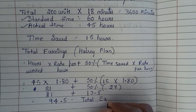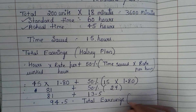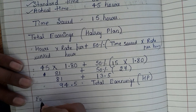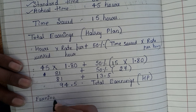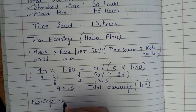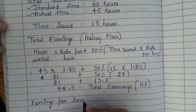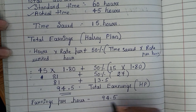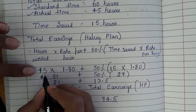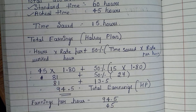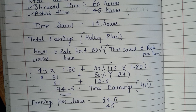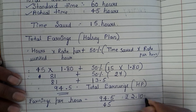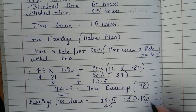Now we need to find earnings per hour under Halsey plan. Total earnings are Rs 94.5. He took 45 hours. So divide 94.5 by 45, and you will get Rs 2.10 per hour.